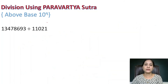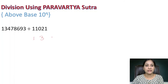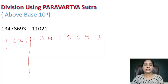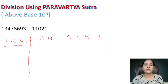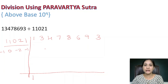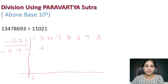Now the last problem: we divide 1347869386 — I'll write it as 1 3 4 7 8 6 9 3 8 6 — wait, and the divisor is 11021. For the transpose, leave the leftmost digit 1 and take the remaining digits 1, 0, 2, 1, giving transpose values minus 1, 0, minus 2, minus 1. Write the first digit 1 as it is. Then multiply 1 by minus 1 giving minus 1 below the second column, 1 times 0 is 0, 1 times minus 2 is minus 2, 1 times minus 1 is minus 1.